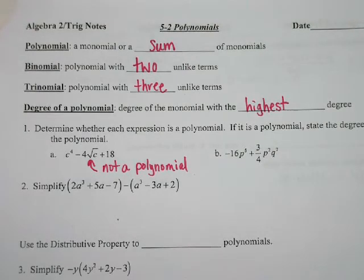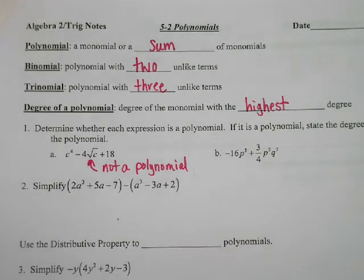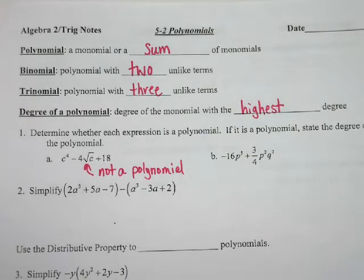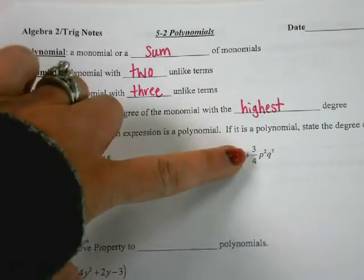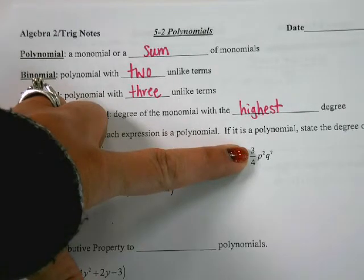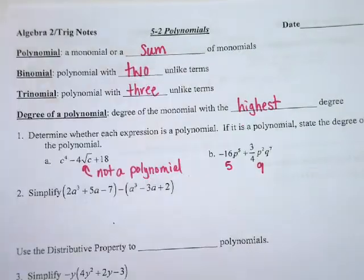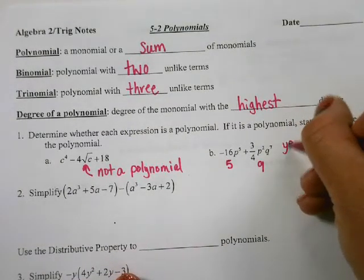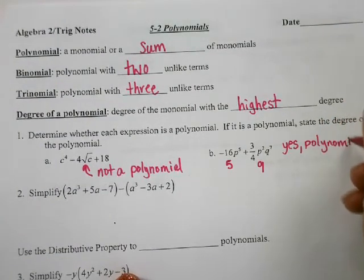However, letter B is a polynomial: I have negative 16p to the 5th plus three-fourths p squared q to the 7th. Let's look at it one term at a time — terms are separated by plus and minus signs. The degree of the first term is 5. The degree of the second term is 2 plus 7, which is 9. Since 9 is bigger, this polynomial's degree is 9.